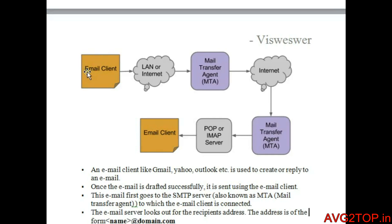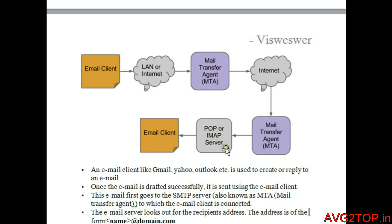Now let's look at a small architecture diagram explaining email flow. From the email client, an email is sent using a local area connection or through the internet. In the server, there is a Mail Transfer Agent — MTA — which is responsible for transferring the email. It then transfers through the internet to the right email domain, where it is received using POP or IMAP protocols and delivered to the receiver's client.